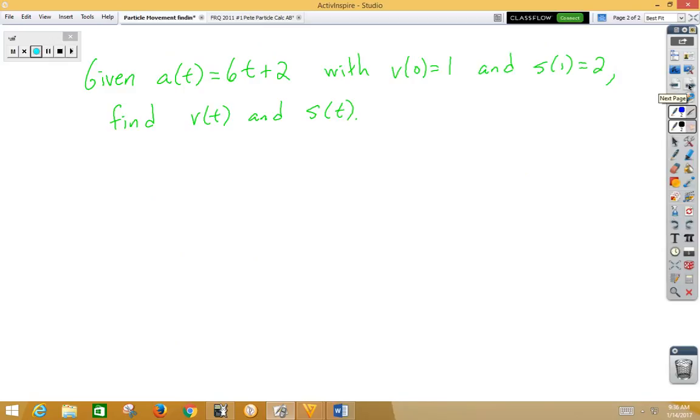In our second example, instead of being given a velocity function, we're given an acceleration function. But we've been provided with a velocity point and a position point that will allow us to solve for c twice.